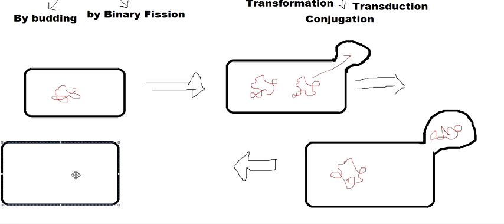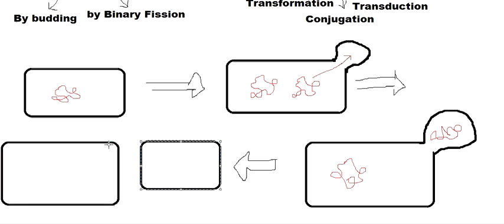There is the parent cell, and then we have another cell which developed from this bud — it grew and separated and became a regular shape. They both have their own genetic material. So that was budding.